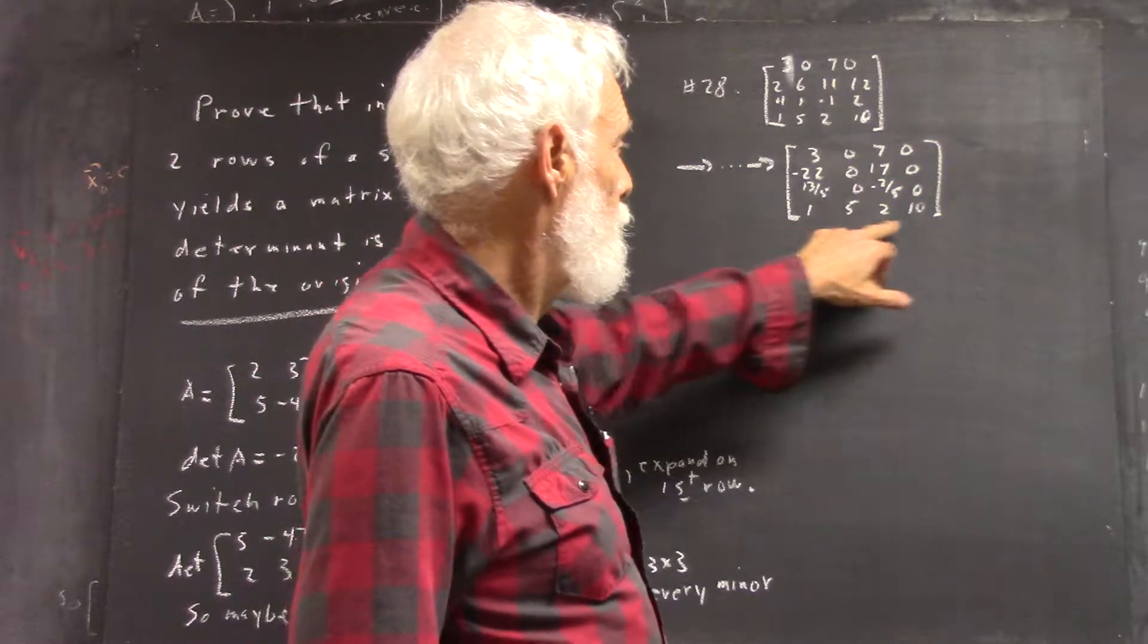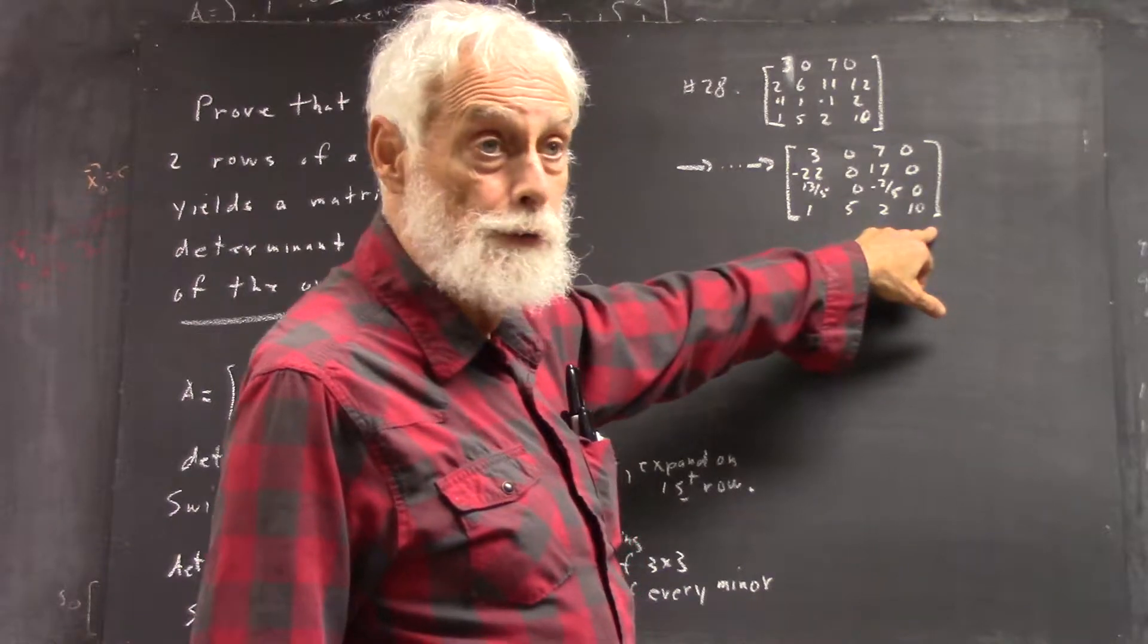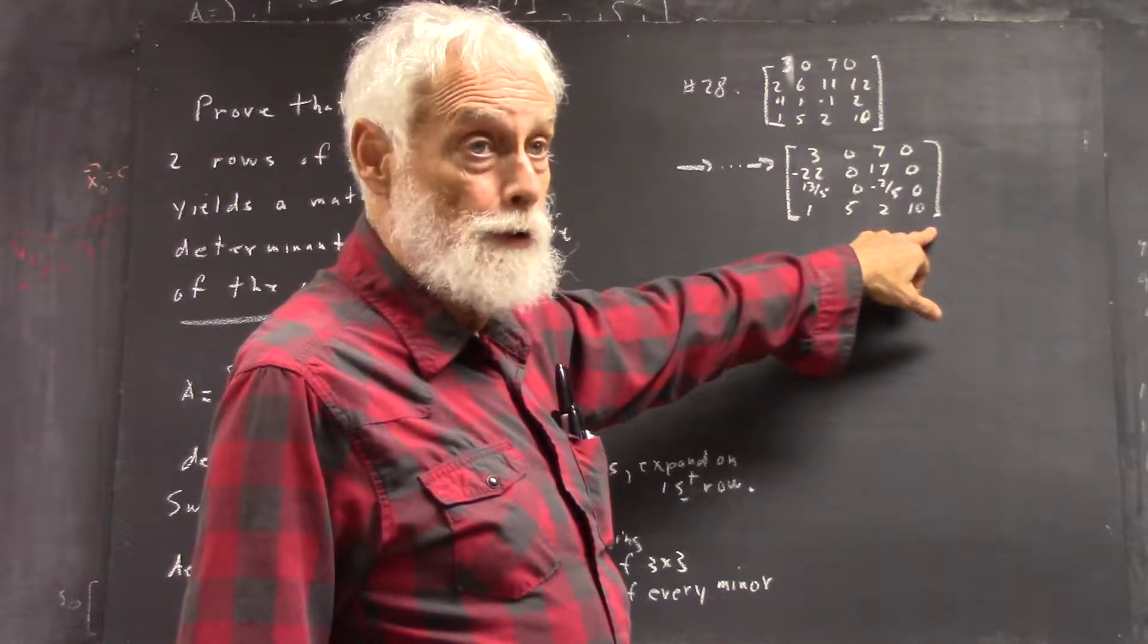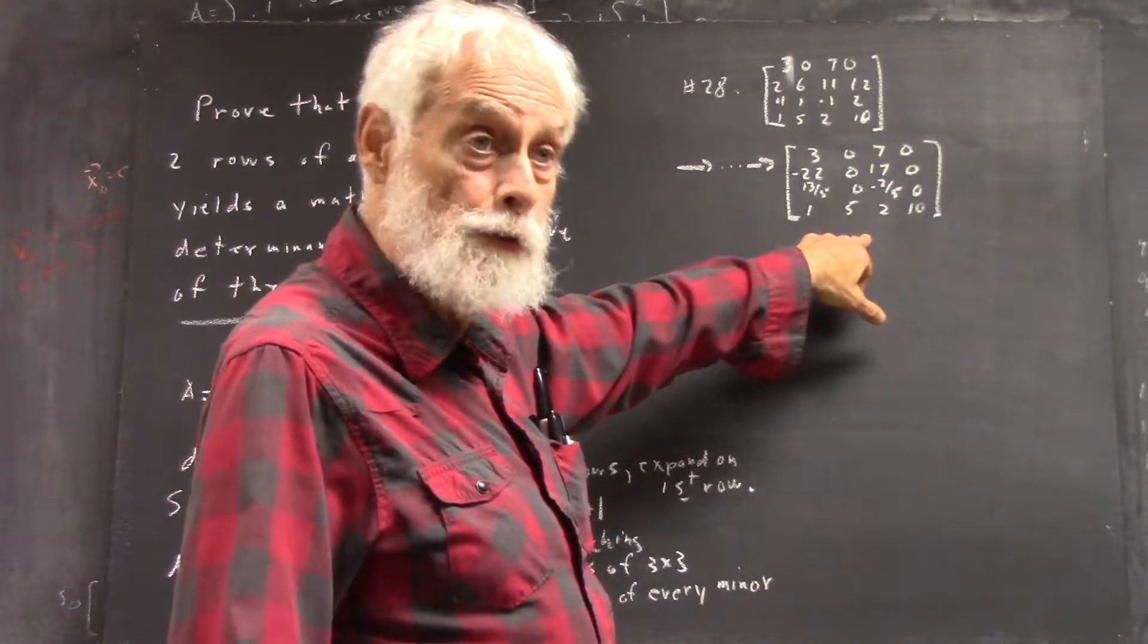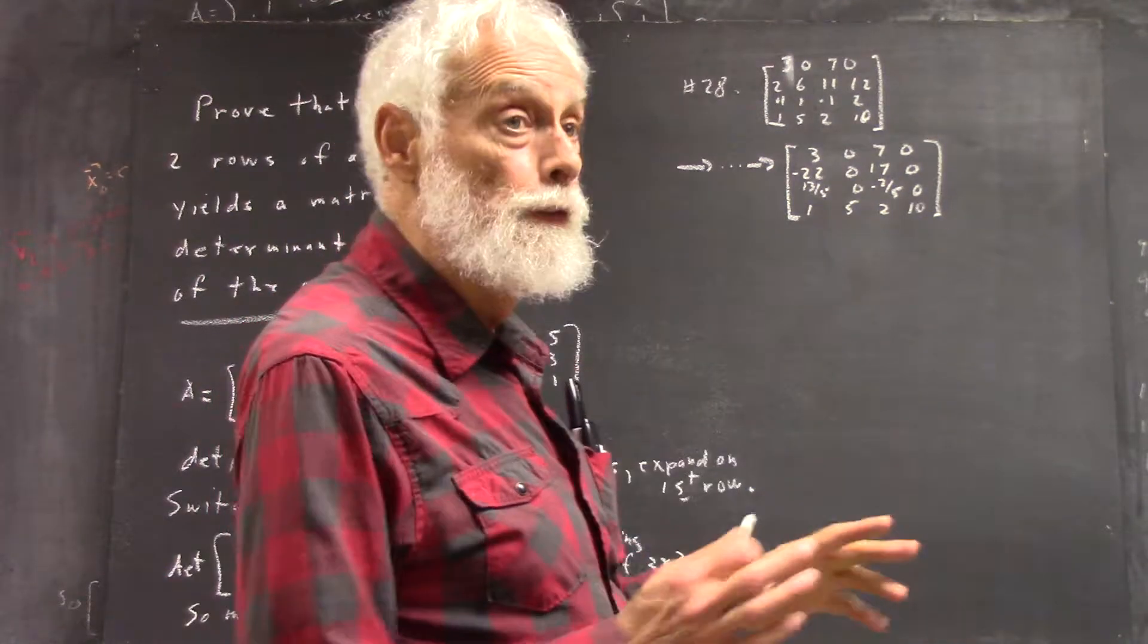Now, I imagine maybe the last row can then be reduced to all zeros because the determinant of this matrix is zero, but you can see it from here. You don't have to go to the last step, although if you do, it's okay. But you want to look for shortcuts, right?